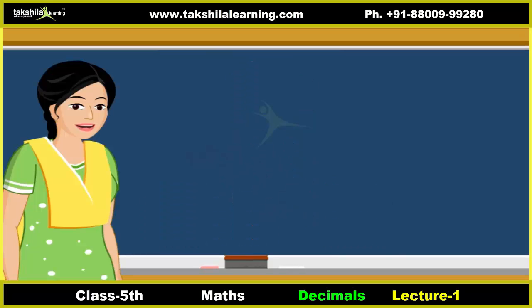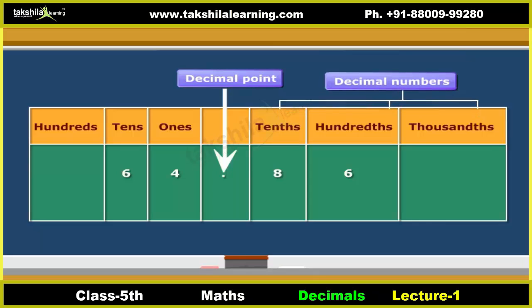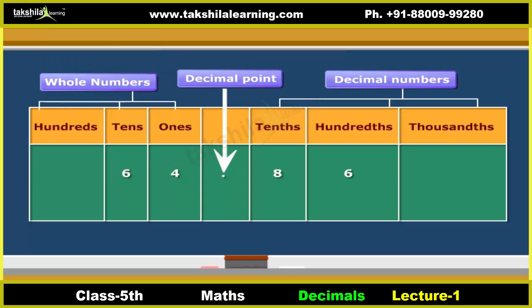Writing decimals is pretty easy. Numbers to the right of the decimal point are decimals. The place values are tenths, hundredths, thousandths, and so on. Whereas numbers to the left of the decimal point are whole numbers. The place values are ones, tens, hundreds, and so on. Therefore, we read this number as 64 and 86 hundredths.